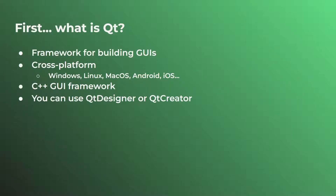First of all, what is Qt in and of itself? Qt is actually a C++ GUI framework, built for the purpose of building graphical user interfaces with C++. These interfaces are cross-platform, so they can run on Windows, Linux, macOS, Android, and iOS. This Qt framework also has different tools that you can use with it, such as the Qt Designer or the Qt Creator.